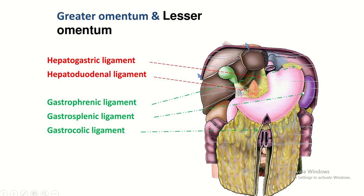One part of the gastroplenic ligament is attached with the stomach and another part is attached with the spleen. And this is the gastrocolic ligament — one part is attached with the greater curvature of the stomach and another part is attached with the transverse colon of the large intestine.